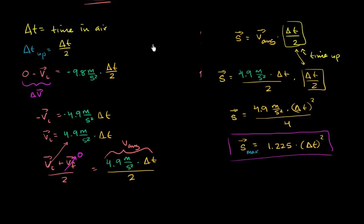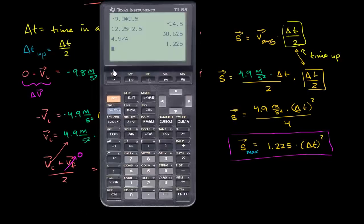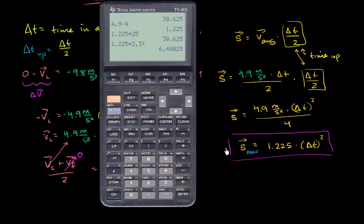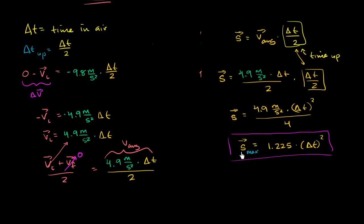That tells us how high the ball gets displaced when it reaches the stationary peak point and starts decelerating downward. We can verify our computation from the last video: if the ball is in the air for 5 seconds, maximum displacement is 1.225 times 5 squared — which is 25 — giving 30.625 meters. That matches the last video. For another example, if the ball is in the air for 2.3 seconds, it's 1.225 times 2.3 squared, meaning it went about 6.48 meters in the air. So this gives a simple expression for maximum displacement as a function of total time in the air, assuming air resistance is negligible. I find that pretty fun — it's a neat game to play.